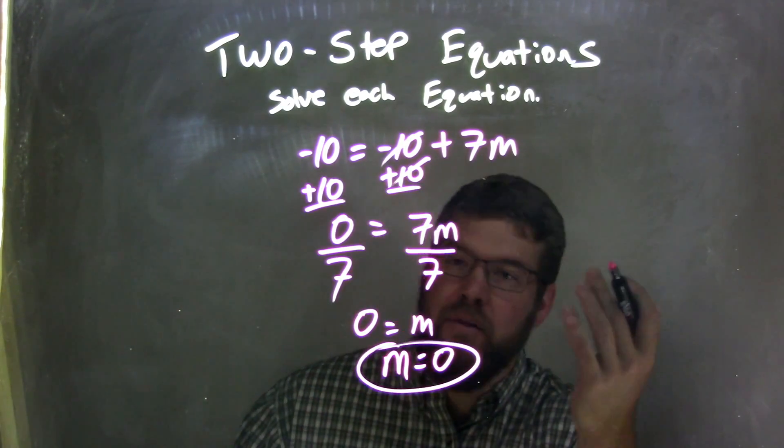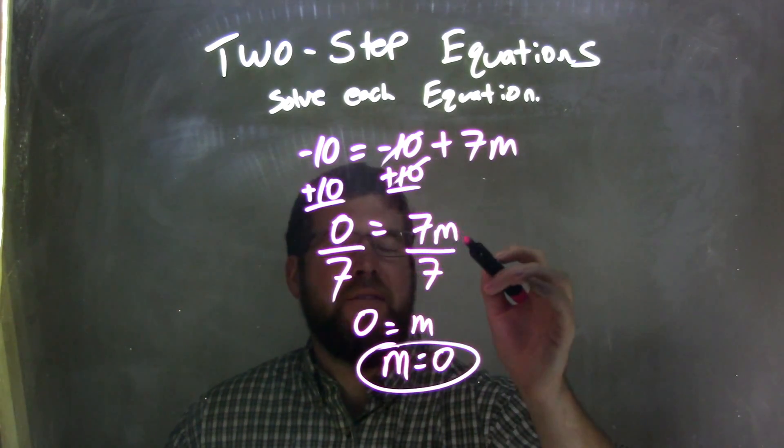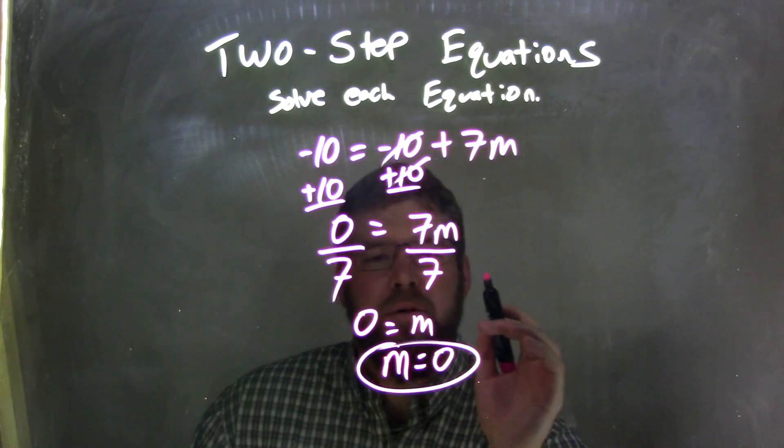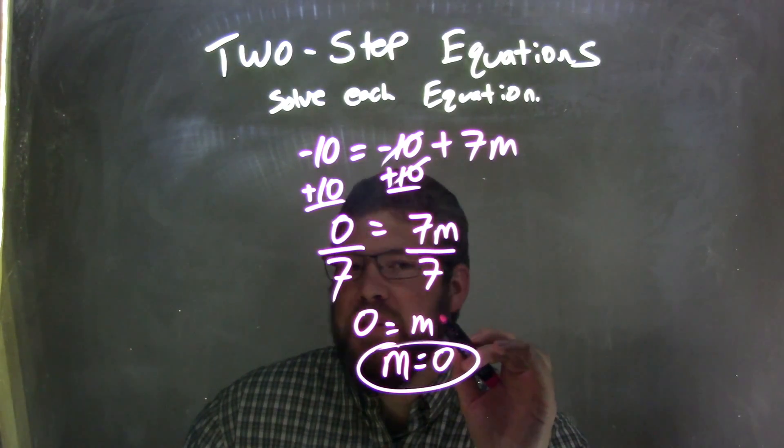You could write it, and eventually I'd get rid of it. So now 0 equals 7m. I then divide by 7 on both sides, leaving me with just m on the right,